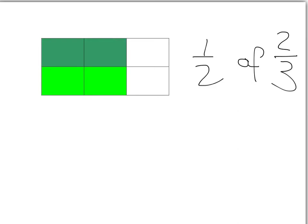So half of two-thirds will be this dark green portion over there. Half of two-thirds, we can see quite easily, is two pieces out of one, two, three, four, five, six. So it is two out of six.